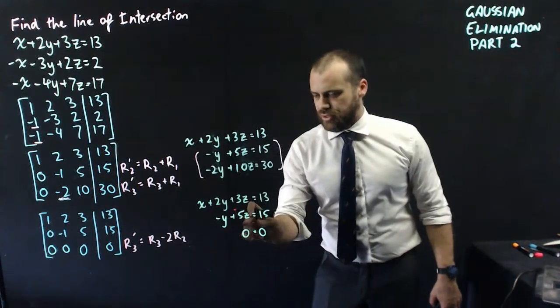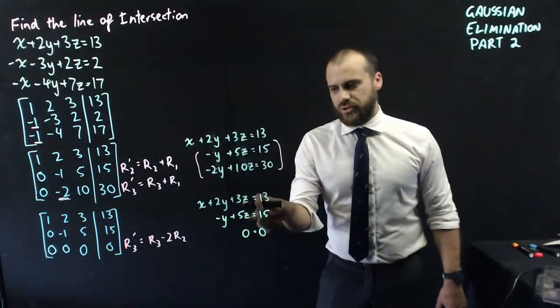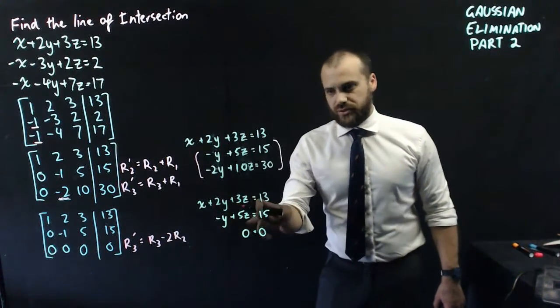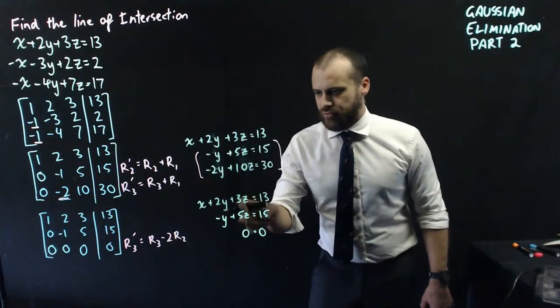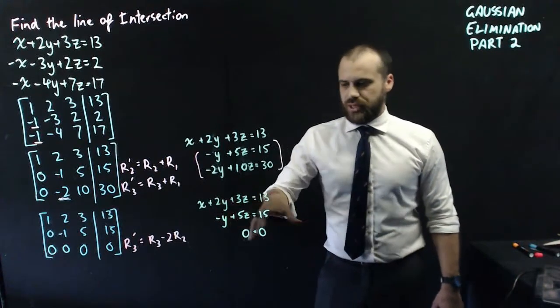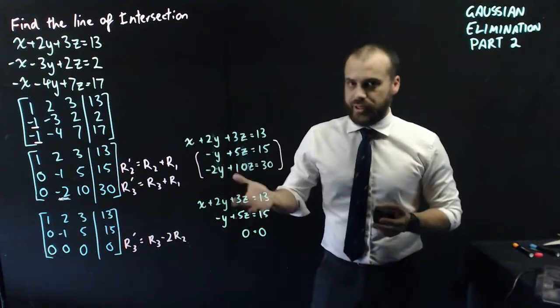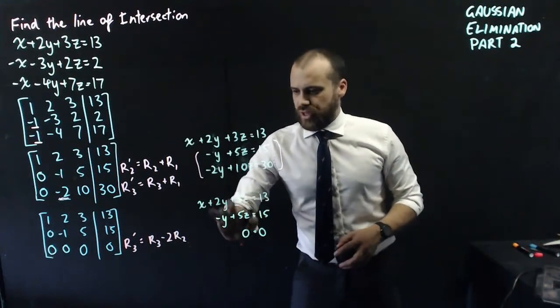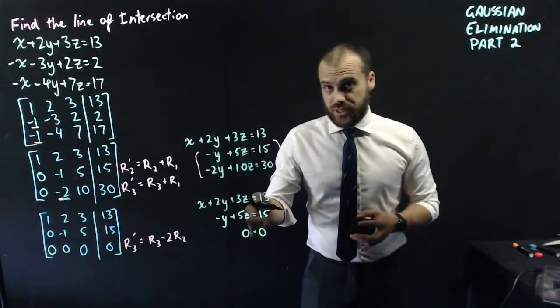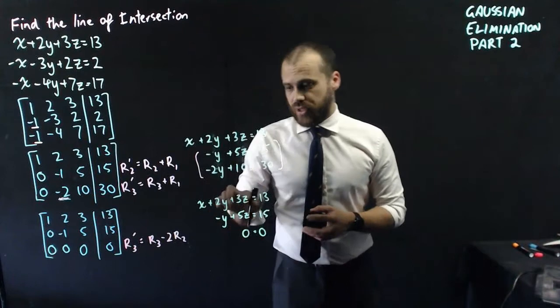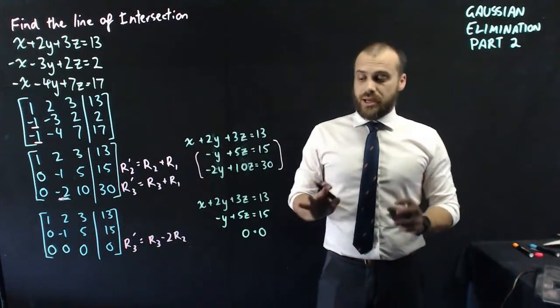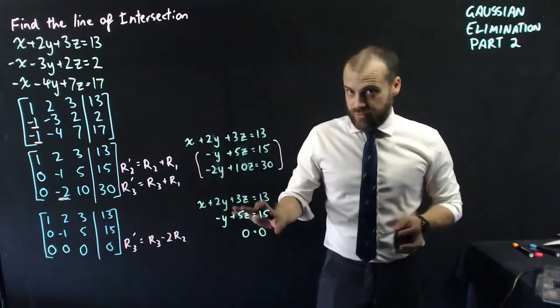Now look at this next line. I could sub a value for z in there and it would spit out a y value. If I sub in the value one there, five times one equals fifteen. So y would have to be like negative ten. I could sub in those two values to this one and it'll spit out an x value. I could sub in a different z value, which would yield a different y value, which would then yield a different x value.